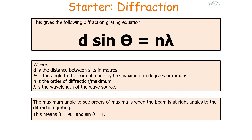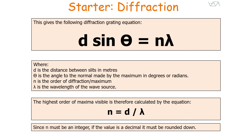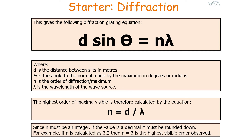The maximum angle to observe orders of maxima is where the beam is at right angles to the diffraction grating, so theta equals 90 degrees. Since sin 90 equals 1, it cancels out of the equation, and the highest order of maxima visible is calculated by N equals D over lambda. Since N must be an integer, if the value is a decimal it must be rounded down. For example, if you calculate N equals 3.2, then N equals 3 is the highest visible order. Even if you get N equals 3.9, the answer is still N equals 3.